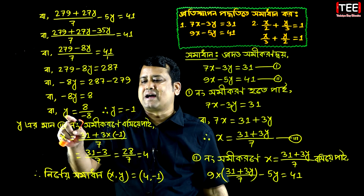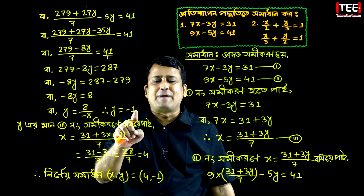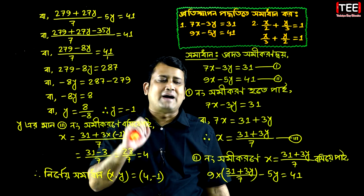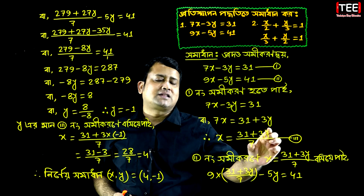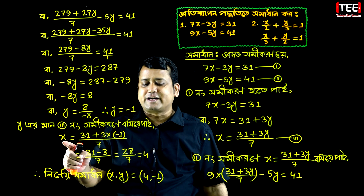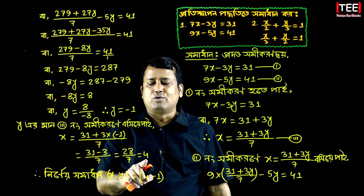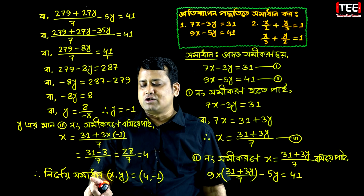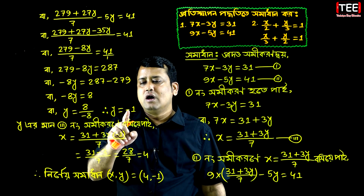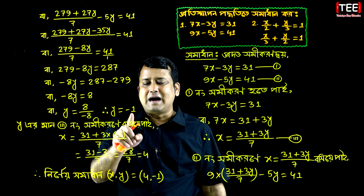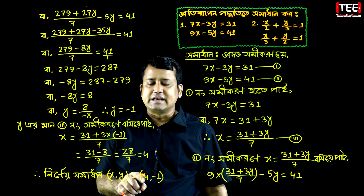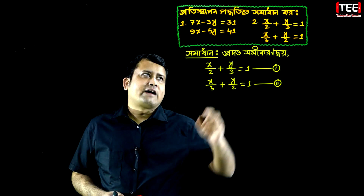Then we will calculate y minus 1 pi. Then y minus 1 will be 3 times pi. Then x minus pi is 4. Then we will calculate x — y equals 4 minus 1. This is our answer.